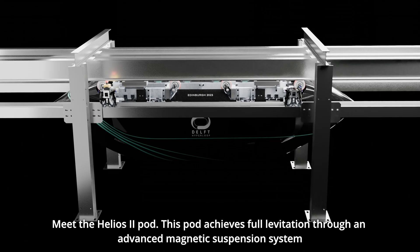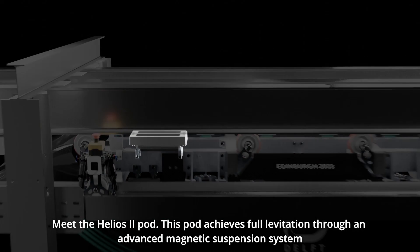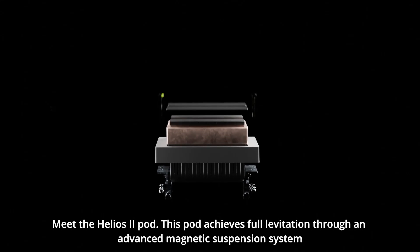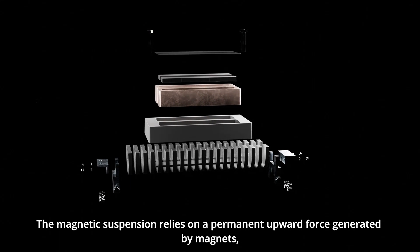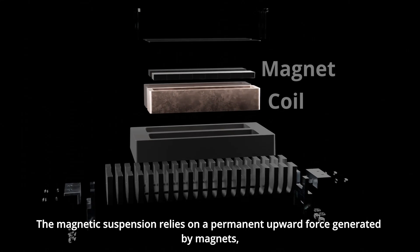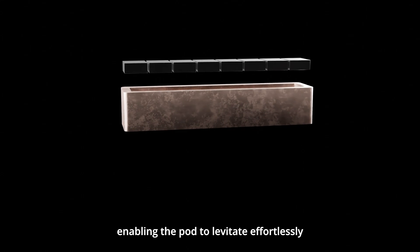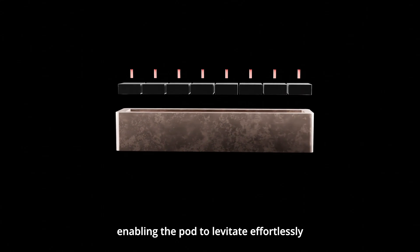Meet the Helios II pod. This pod achieves full levitation through an advanced magnetic suspension system. The magnetic suspension relies on a permanent upward force generated by magnets, enabling the pod to levitate effortlessly.